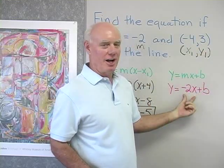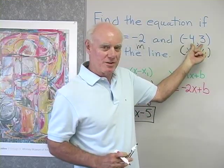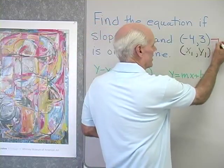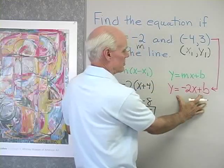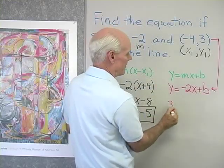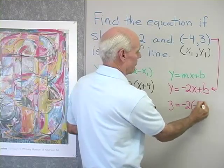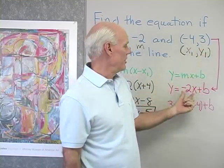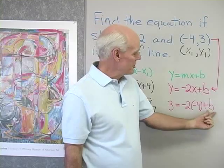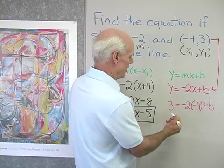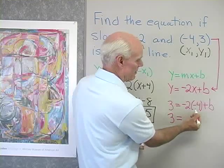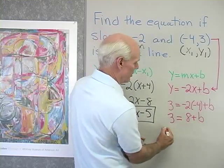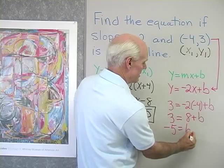This point (-4, 3) is on the line, which means if I substitute the coordinates into the equation I'll get a true statement. So I take x equal negative four and y equal three and substitute in: three equals negative two times negative four plus b. This has to be a true statement, and it tells me what b must be. So three equals positive eight plus b. Adding negative eight to both sides, I get negative five equals b.